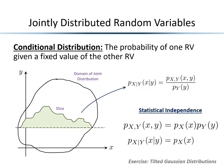One important property is statistical independence. Formally, this means the joint distribution of two random variables factorizes into the product of the marginal distributions, or equivalently the conditional distribution of X given Y equals the original distribution of X. Practically, when two random variables are independent we can't do any learning, because knowing something about Y doesn't tell us anything additional about X, and vice versa. The TAs have prepared an exercise on tilted Gaussians to practice plotting joint distributions and understanding conditional distributions.